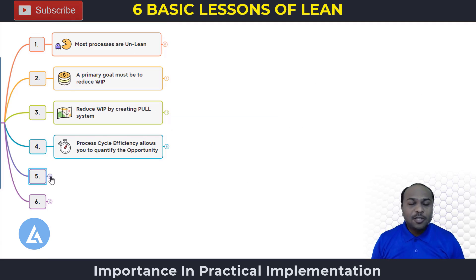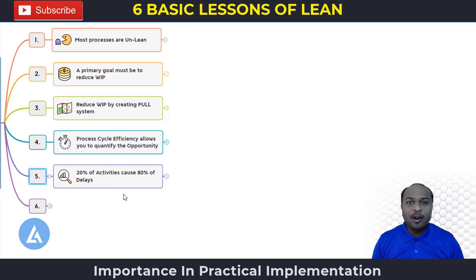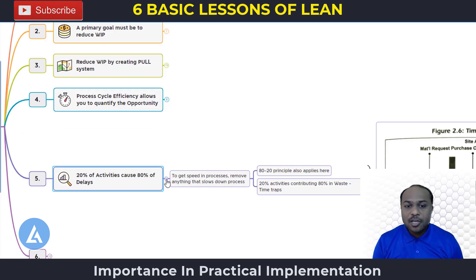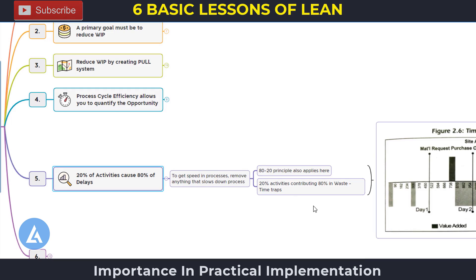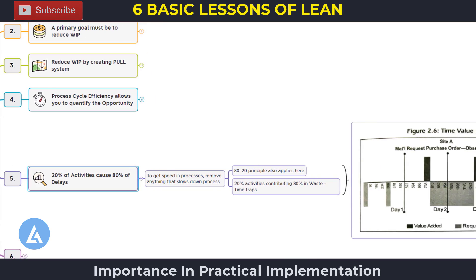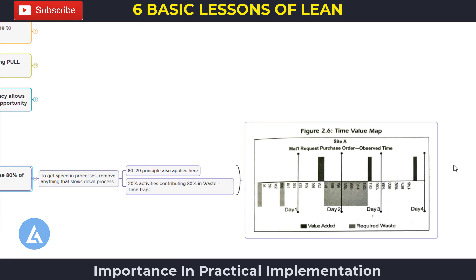Lesson number five is the Pareto principle: 20% of activities cause 80% of the delays or waste in your business operations. Identify this 20% of activities and start working on them immediately. This 20% contributing to 80% of the waste is also called time traps. Using the time value map, we can identify value added activities, required waste, and non-value added activities, and take immediate action on them.